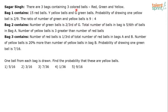There are three bags containing three colored balls: red, green, and yellow. Bag one contains 15 red balls, y yellow balls, and g green balls. The probability of drawing one yellow ball is 2 by 9. The ratio of green to yellow balls is 9 to 4. Bag two contains green balls equal to two-thirds of g.